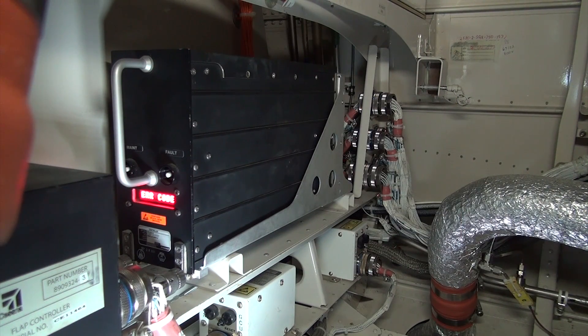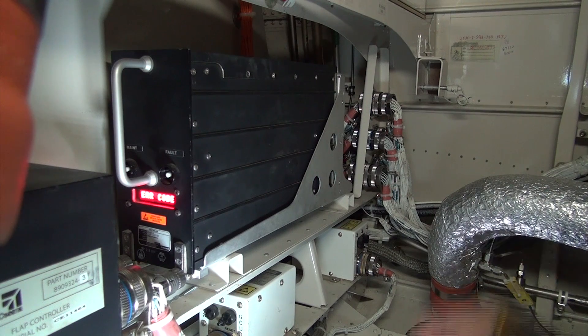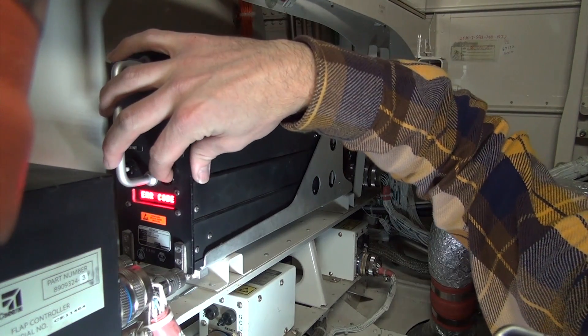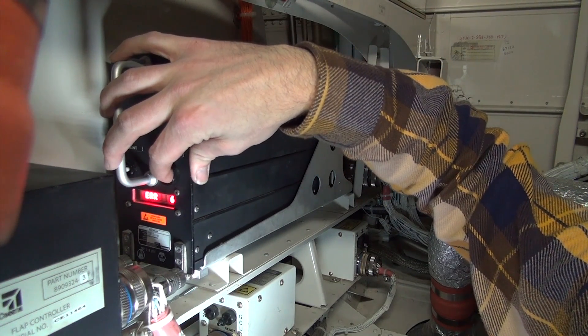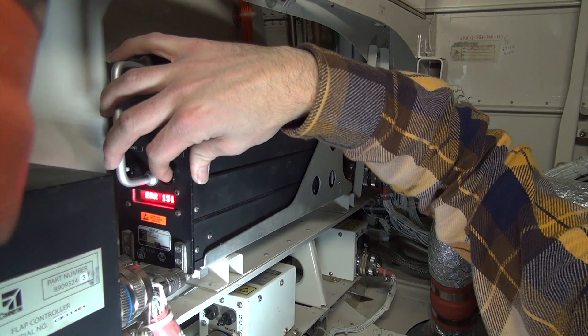Press the Fault button to display the numeric error code. Continue to press the Fault button and record successive numeric error codes until End is displayed.